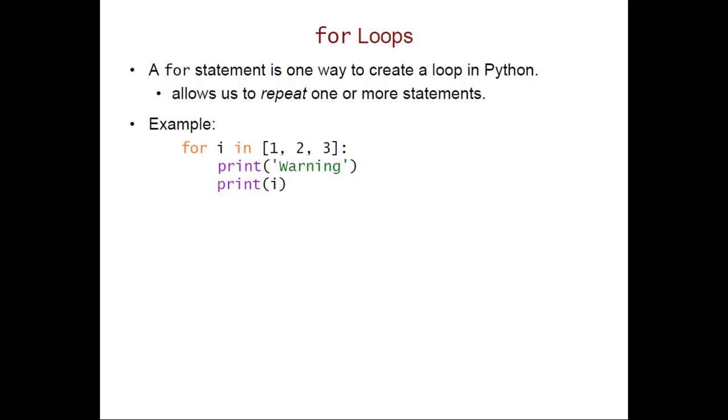So here's an example of a for loop and you can see that these two lines, these two print statements are indented under this for line, that's the header of the loop, and in this case we're going to end up repeating those two indented lines three times.